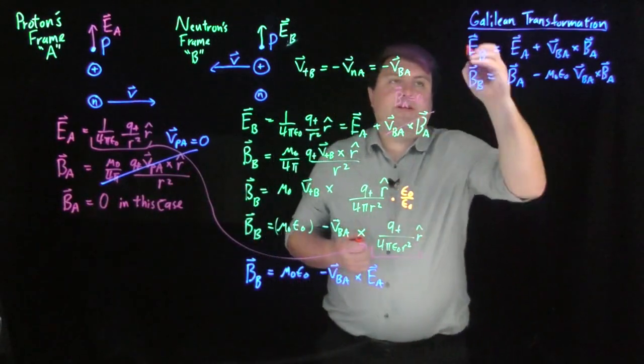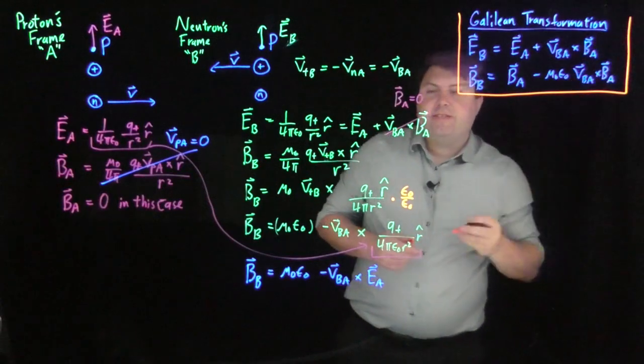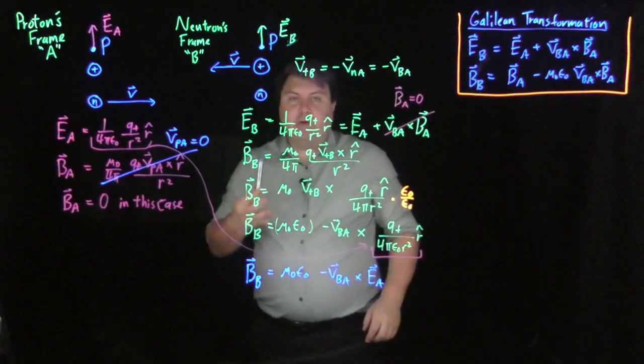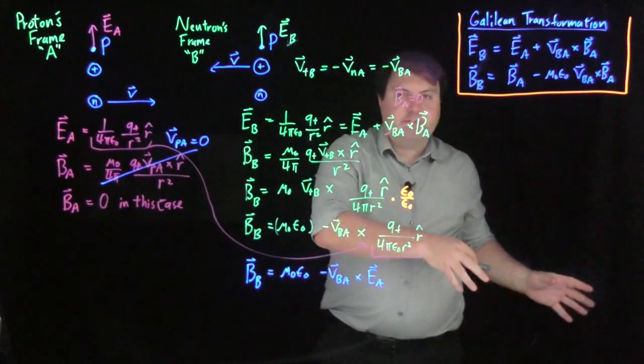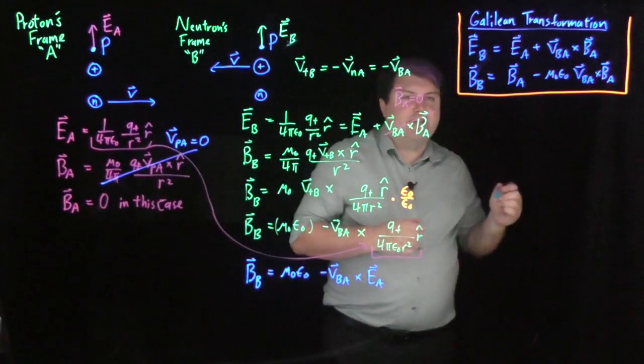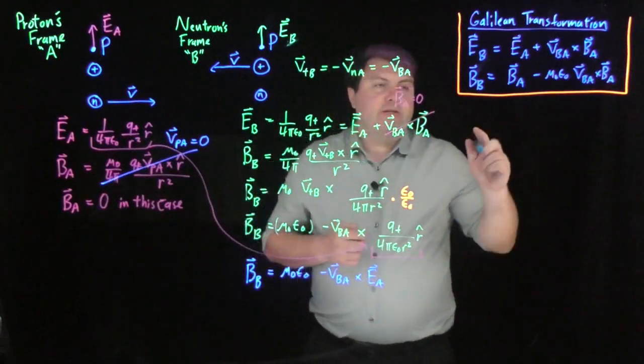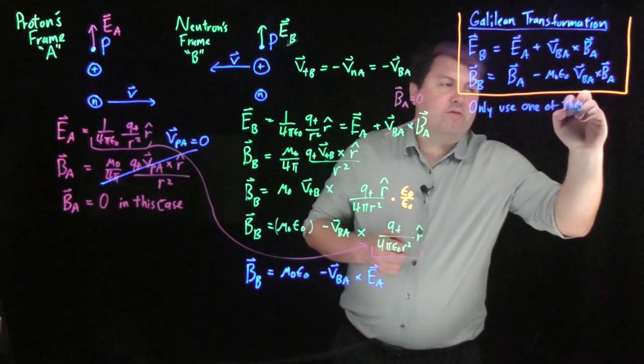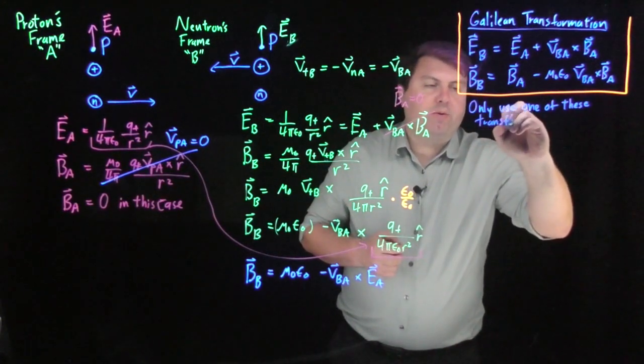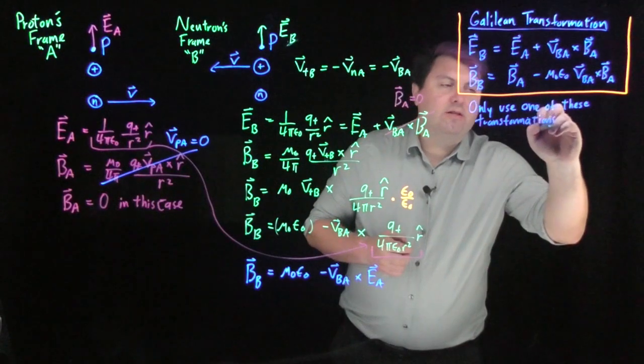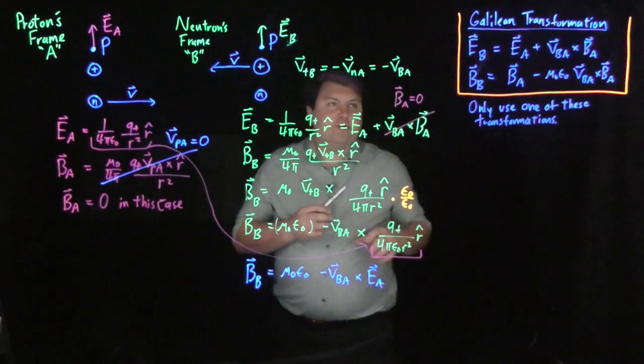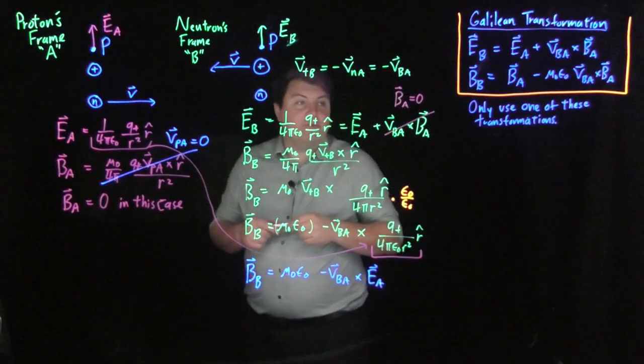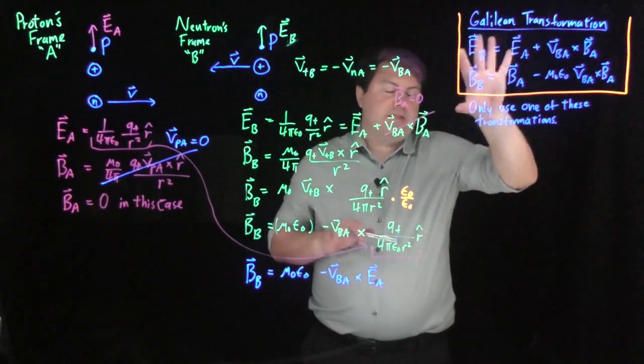So these are my Galilean transformations. Now, this is the absolute limit, why it's one of the last videos we have in this lecture of what we can do with our current understanding of physics without any special relativity. But one thing that we'll tell you is you can only use one of these transformations. They're both built upon a lot of assumptions that we've used to get here. And as such, if we try to use both of them, it will break things down. We'll show that in a problem in another video this week. We can only use one of these two transformations, and that's that.